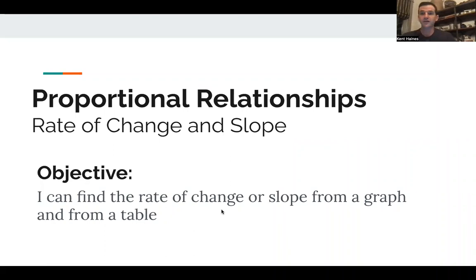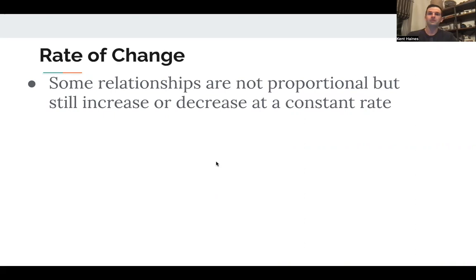All right. So today we're going to be talking about rate of change, which is also known as slope. So we're moving away a little bit from proportional relationships, and we're going to start looking at other types of relationships that have a consistent rate of change. Some relationships are not proportional, but they still increase or decrease at a constant rate.